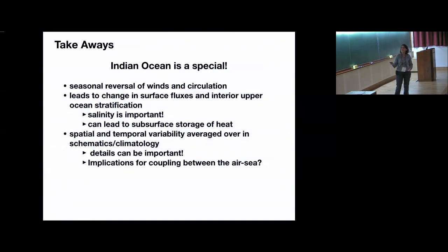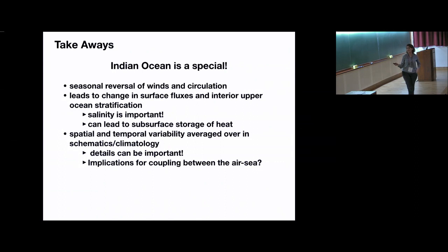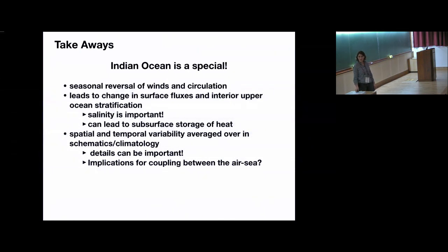Key takeaways: the Indian Ocean is special. There is a seasonal reversal of winds and circulation that leads to changes in surface fluxes impacting upper ocean temperature and salinity stratification. Salinity in the Bay of Bengal is very important and can stabilize the ocean — while subsurface warm layers can mean temperature stratification is destabilizing, salinity is enough to keep the density stratification stable. Keep in mind that schematics and climatologies average over large spatial and temporal variability, and these unresolved details may have implications for ocean-atmosphere coupling, which is what the MISO-BoB program is about.